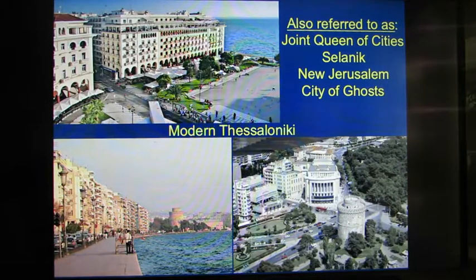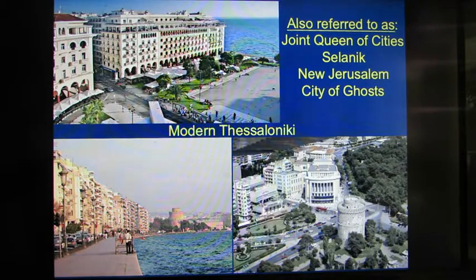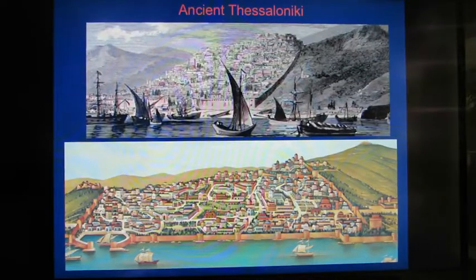Thessaloniki was also referred to as the 'joint queen of cities' between Thessaloniki and Byzantium or Constantinople. It was named Selenik under Turkish occupation, 'New Jerusalem' with the arrival of the Sephardic Jews, and then the 'City of Ghosts.' Here I'm showing a depiction of ancient Thessaloniki.